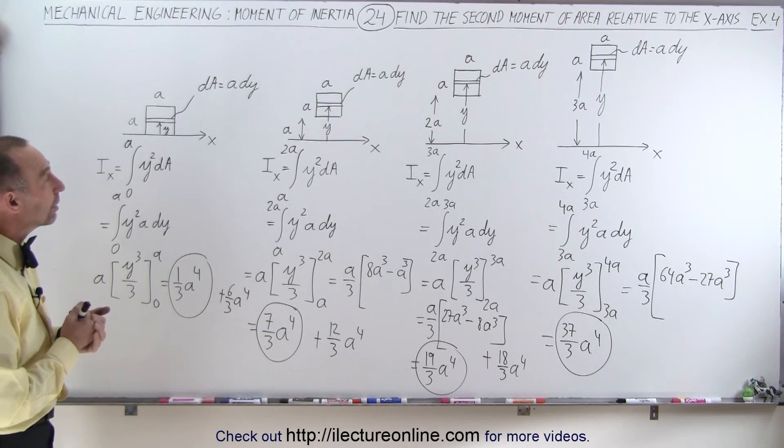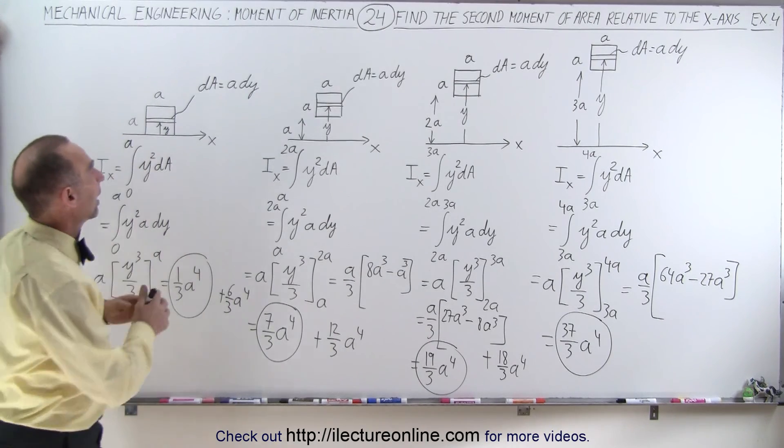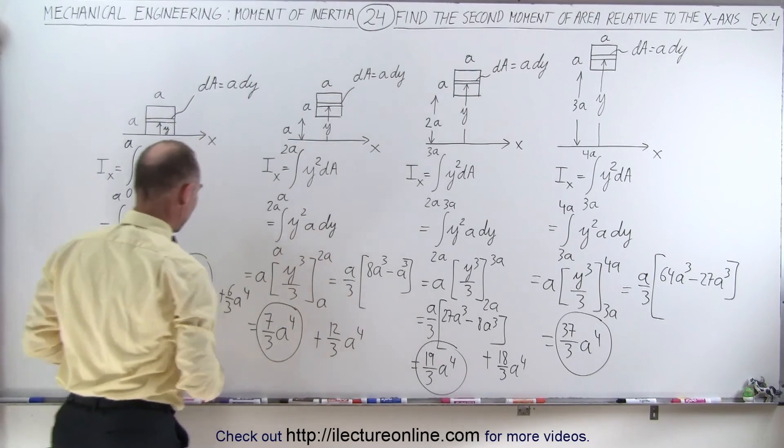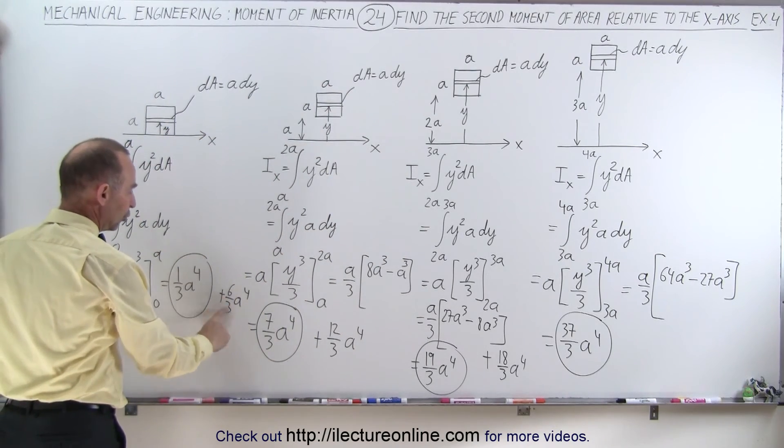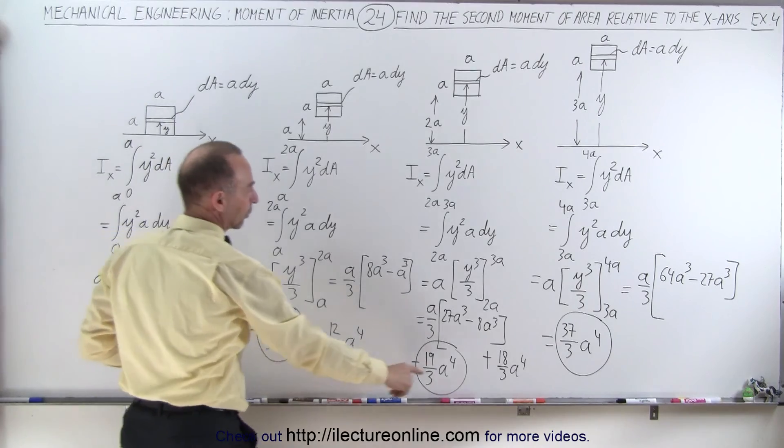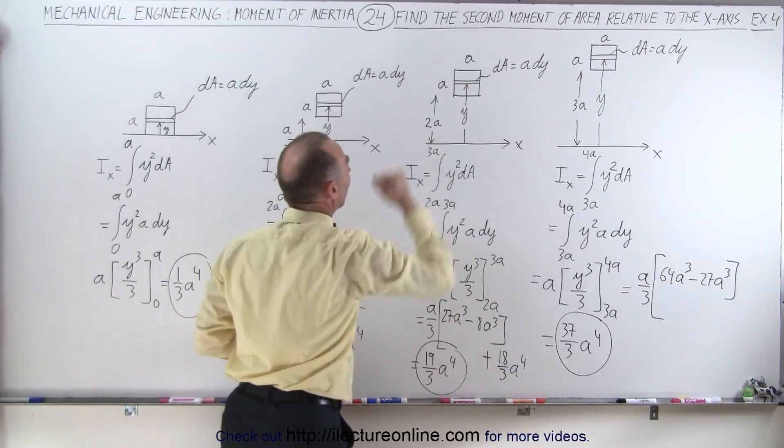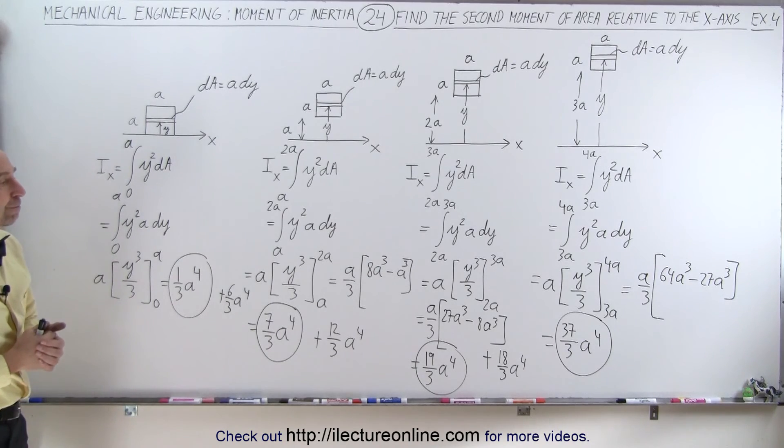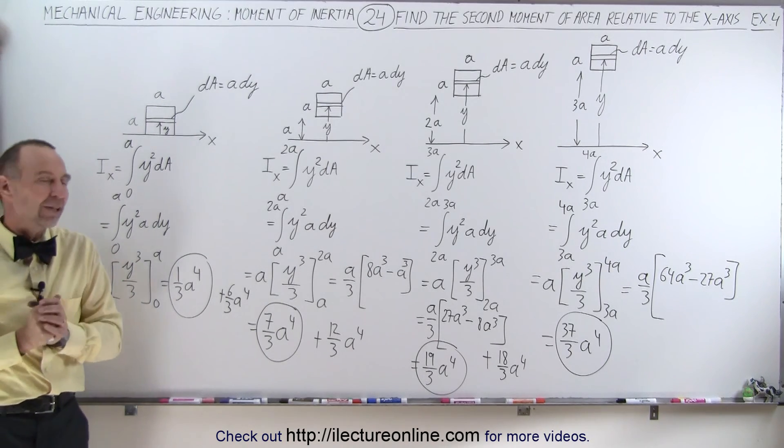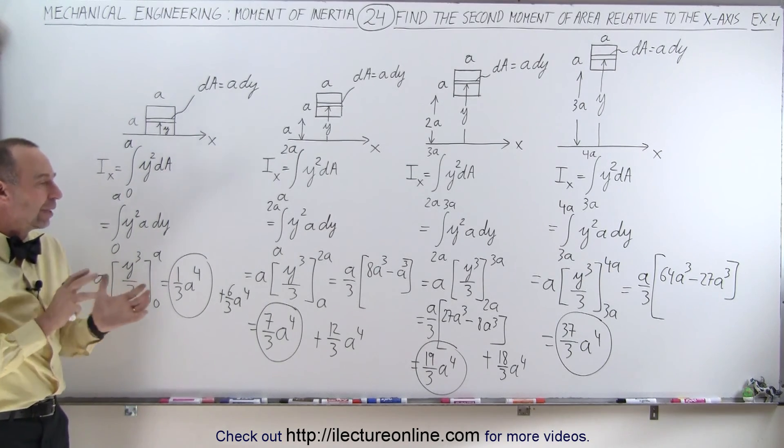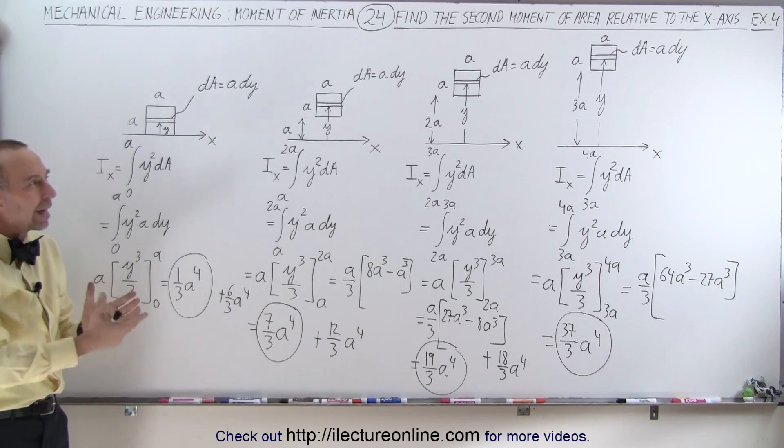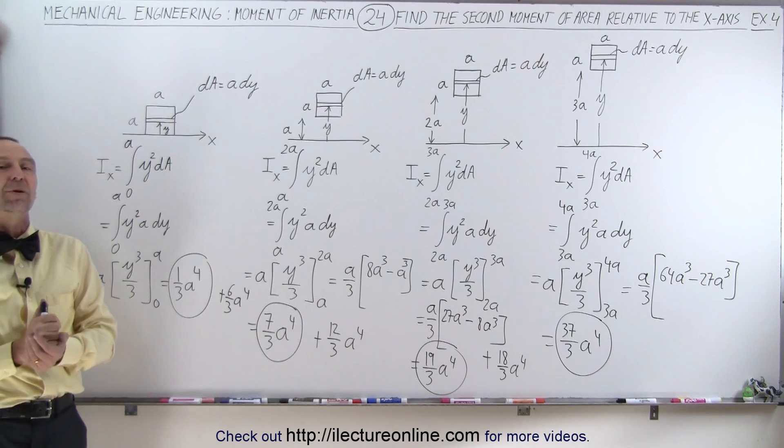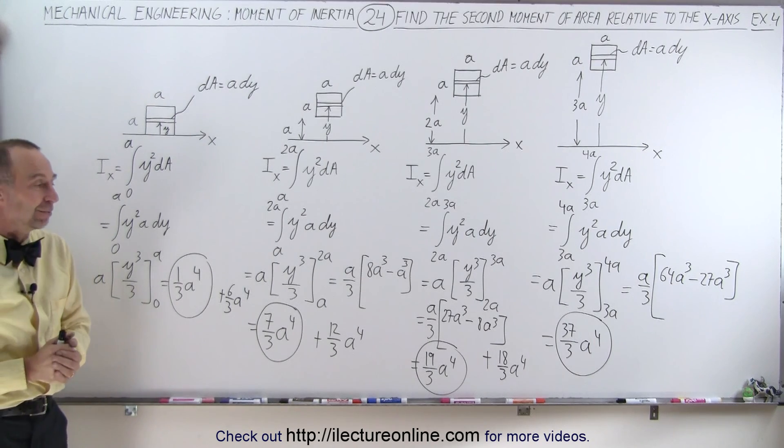That's kind of interesting when you think about it, because each time I raise the square by a distance of a up, I have to add an additional 2a to the fourth, 4a to the fourth, 6a to the fourth, every time I increase the distance by 1a. So, interesting aspect of that result, and you can see how you can develop patterns. Then later on it makes it much easier to calculate some of these second moment of areas. And that's how it's done.